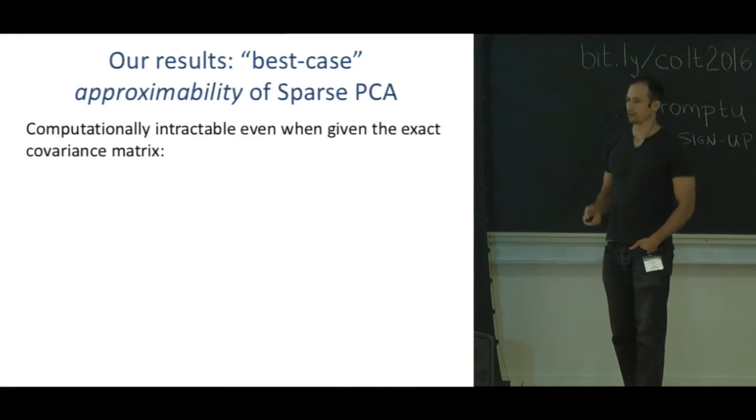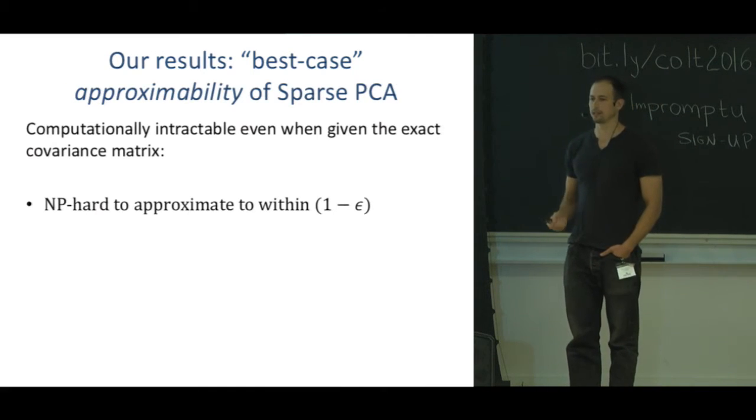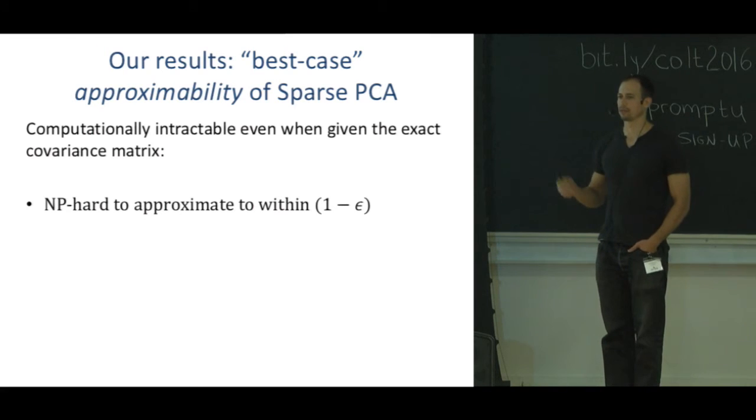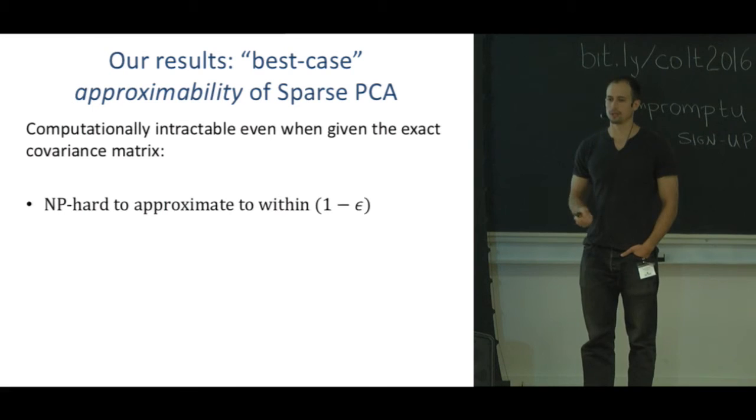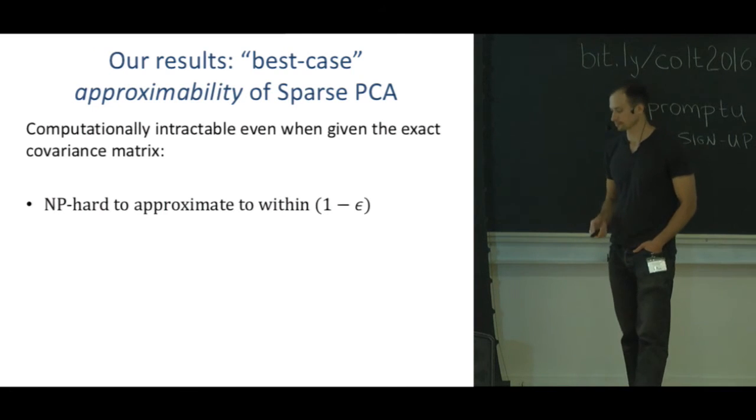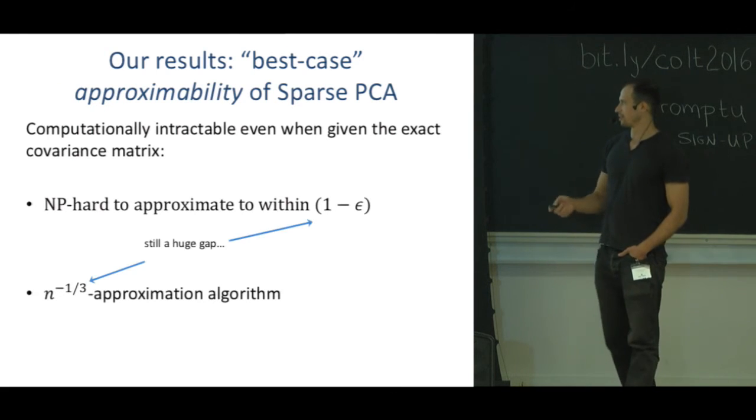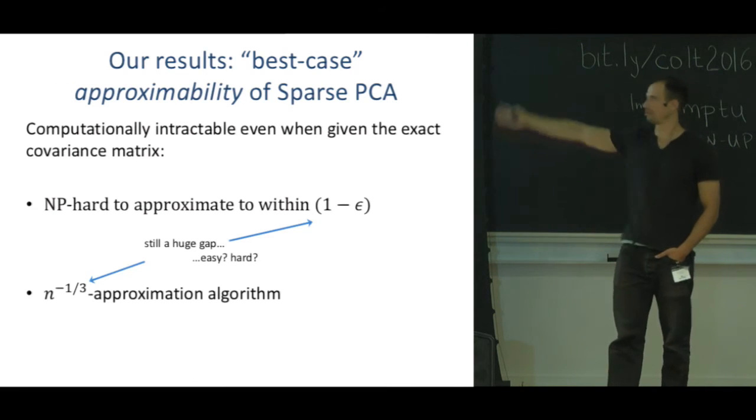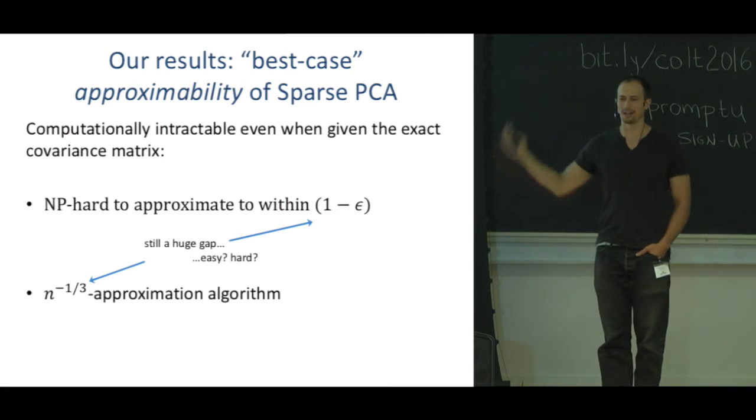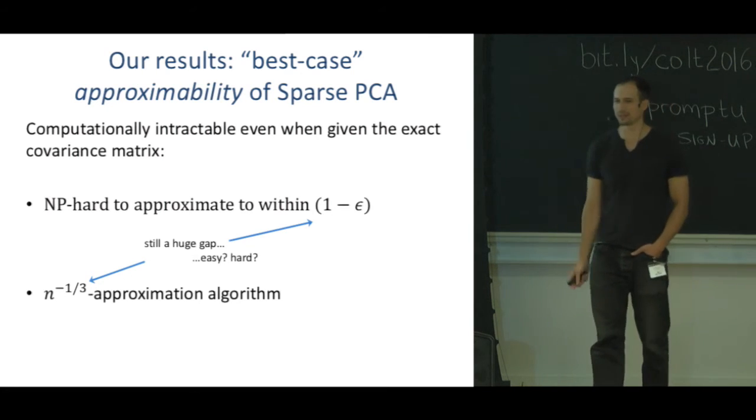First we show that even if you get this matrix explicitly and exactly, finding a 1 minus epsilon approximation for some constant epsilon is NP-hard. But we give a very simple n to the minus 1/3 approximation algorithm, so there's still a huge gap. We'd like to know if we can actually get this 0.99 approximation—that would be great. If n to the 1/3 is the best you can do, that's not so great.